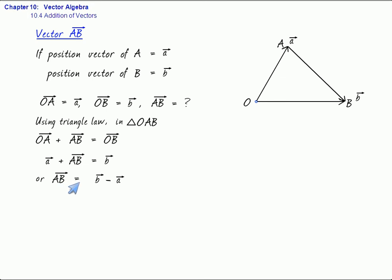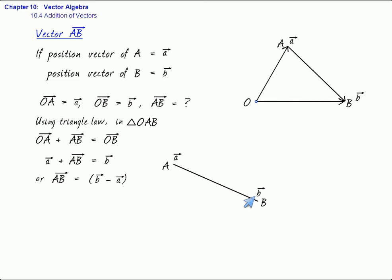That is, it is always terminal minus initial. If you want to find vector AB and you know the position vectors of points A and B, then vector AB equals the position vector of the terminal point B minus the position vector of the initial point A, giving B minus A.